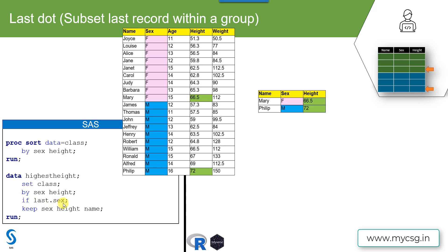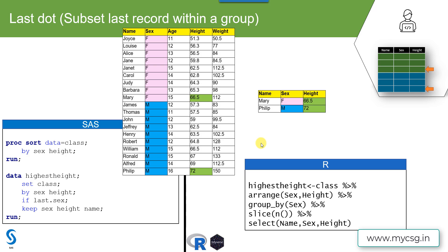We need to identify the last record within each sex value, so we only need the last.sex variable. We use the subsetting if statement with last.sex to select only the last record within each unique value of sex — F and M. The value of last.sex is set to 1 on the last record of females and the last record of males. Since we sorted the data so the highest height appears last, subsetting using last.sex gives us the student with the highest height in each group.